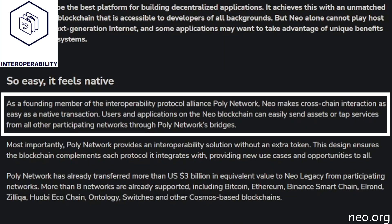Starting with interoperability: NEO is a founding member of the interoperability protocol alliance Poly Network. This makes cross-chain interaction as easy as a native transaction on the network. Users, applications, or smart contracts can easily send assets or tap into services from other participating networks within the Poly Network bridges. Importantly, this does not require another token — it is all built natively into the NEO 3 ecosystem. Poly Network has already transferred 3 billion dollars to the NEO legacy ecosystem, and it enables NEO to work with Ethereum, Binance Chain, and other smart contracting platforms.